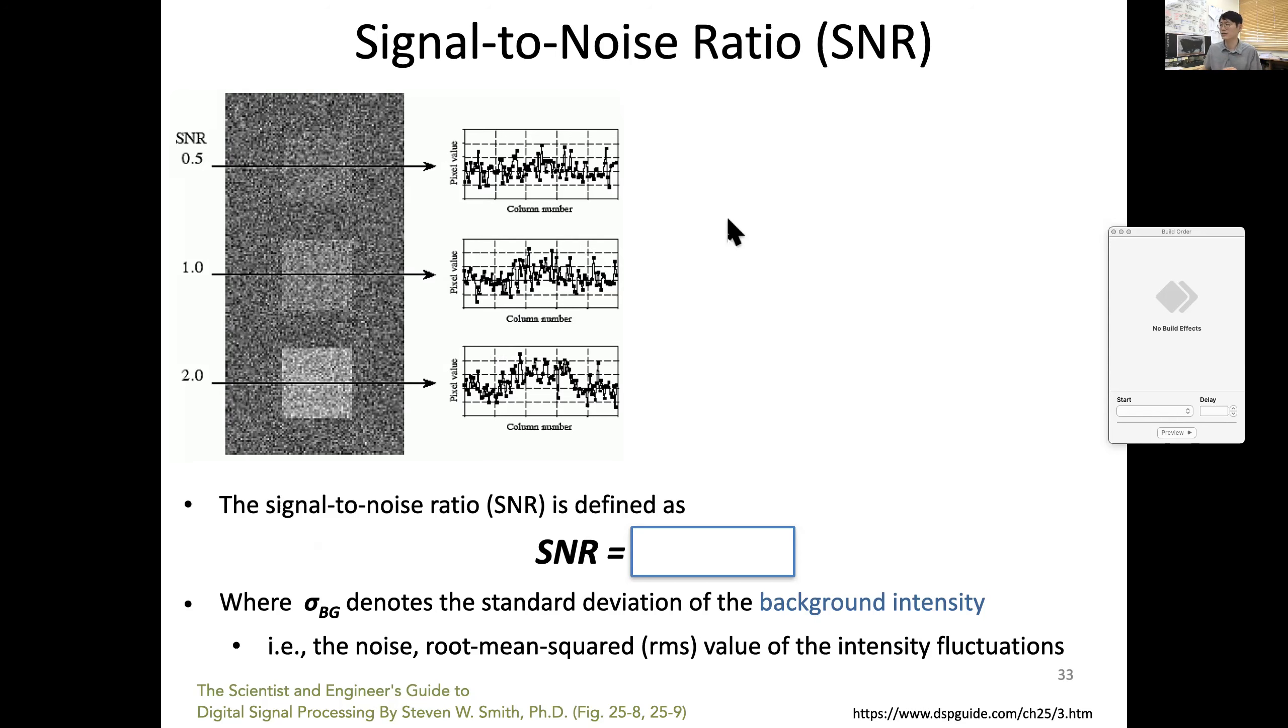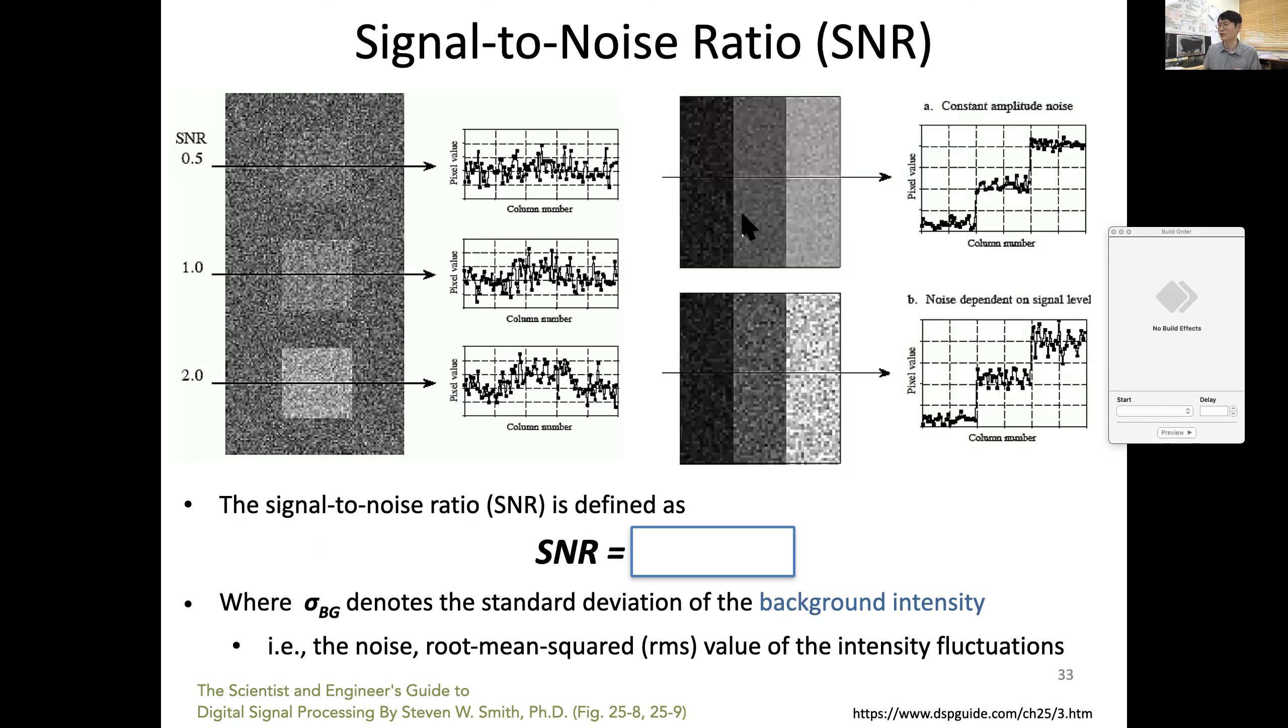This is a little advanced, but I want to show two examples of noise. If you look at this profile, there is a signal level but it also involves noise. These two show two different categories of noise. This one, even when the signal level is high, the level of standard deviation of noise remains the same.